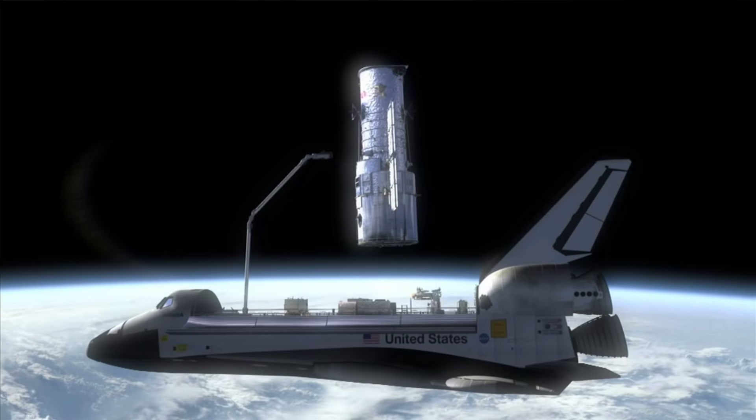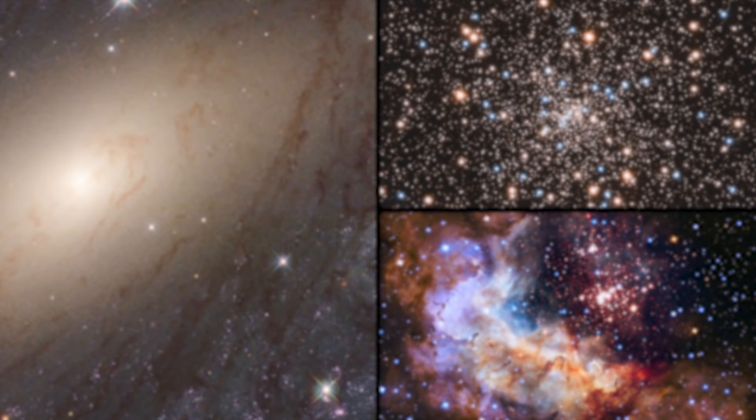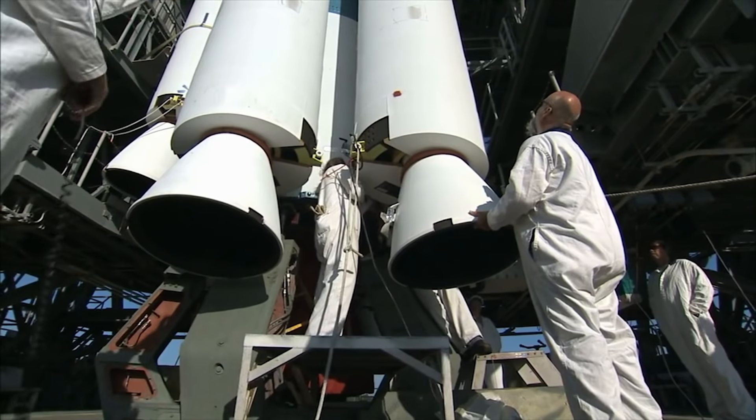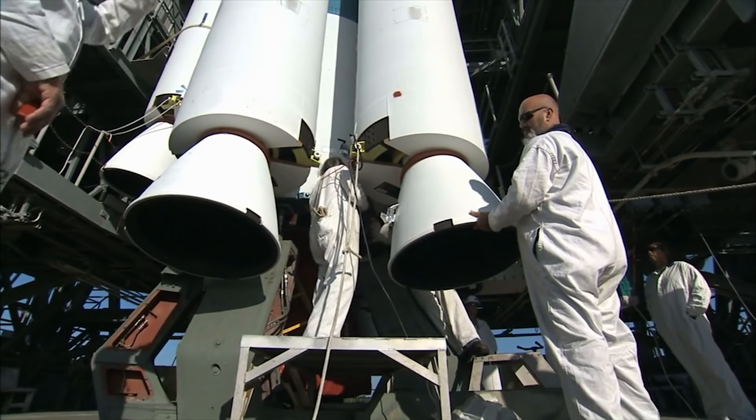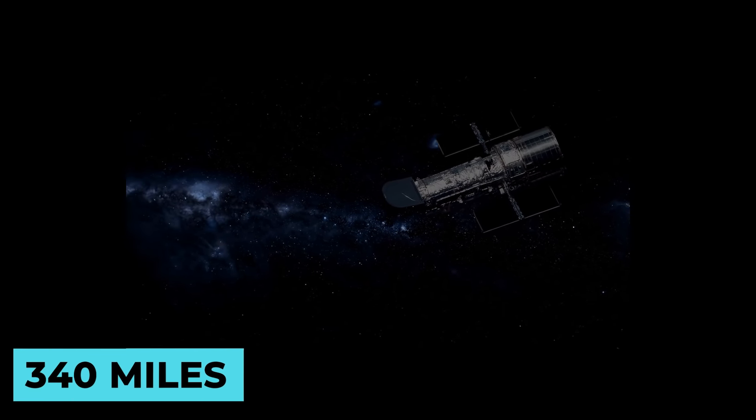Hubble lived a long time. To correct the telescope's initial blurry vision and perform maintenance and upgrades, five space shuttle crews are dispatched to the site to assist.